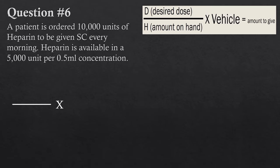Question six: a patient has ordered 10,000 units of heparin to be given subQ every morning. Heparin is available in a 5,000 units per 0.5 milliliter concentration. This is a little more complicated than the previous ones, but the same principles apply. Pause it, try it yourself, and then come back and we'll do it together.